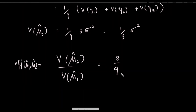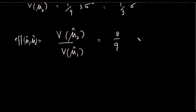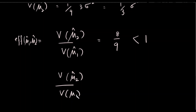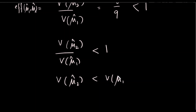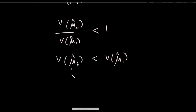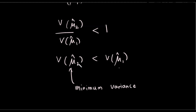The variance of mu1 hat is given. We have mu2 hat given, so which estimator will be used — mu1 hat or mu2 hat. The unbiased estimators are shown. If we take the first step and the second step, this is the minimum variance.